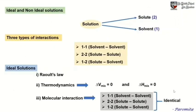In this section we will study about ideal and non-ideal solutions. We know that a solution consists of solute molecules and solvent molecules. We are designating the solute molecules as 2 and the solvent molecules as 1. We have three types of interactions in a solution: solvent-solvent (1-1), solute-solute (2-2), and solute-solvent (1-2).